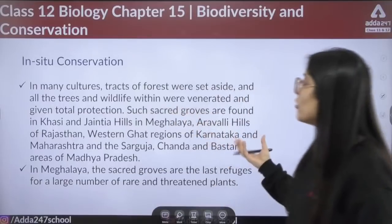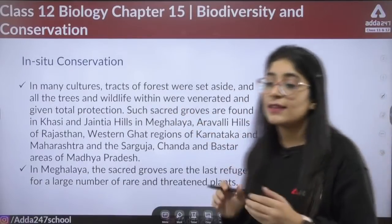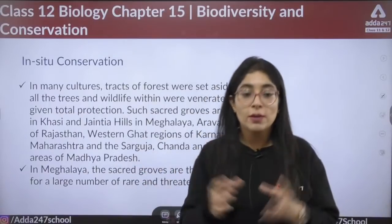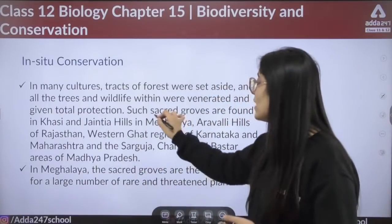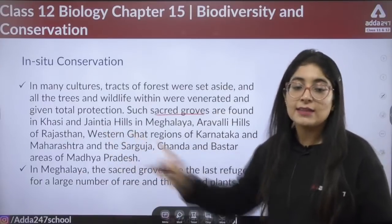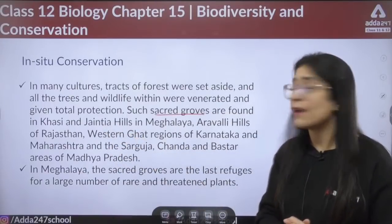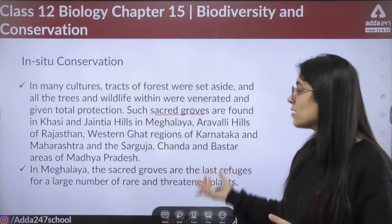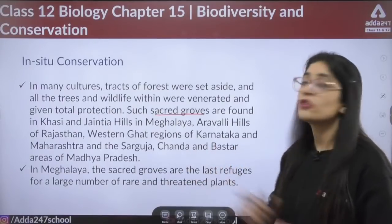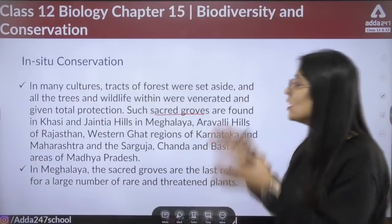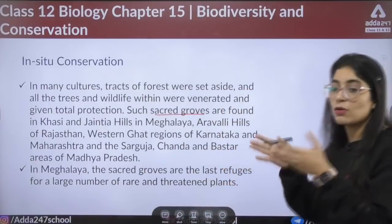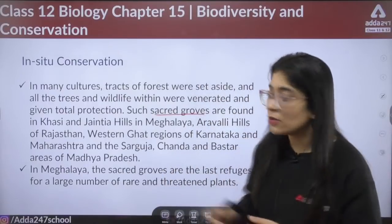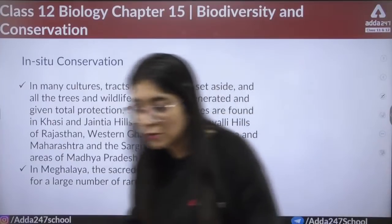In many cultures, tracts of forest were set aside where all trees and wildlife were venerated and given total protection — these are known as sacred groves. They are found in the Khasi and Jayantia Hills in Meghalaya, Aravali Hills of Rajasthan, Western Ghats regions of Karnataka and Maharashtra, and Sarguja, Chanda, and Bastar regions of Madhya Pradesh.